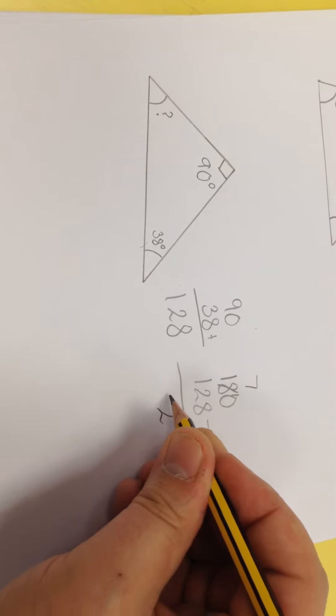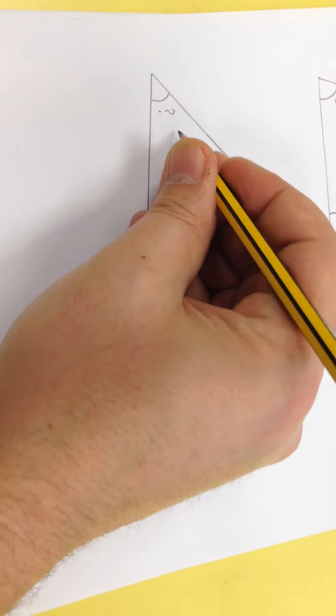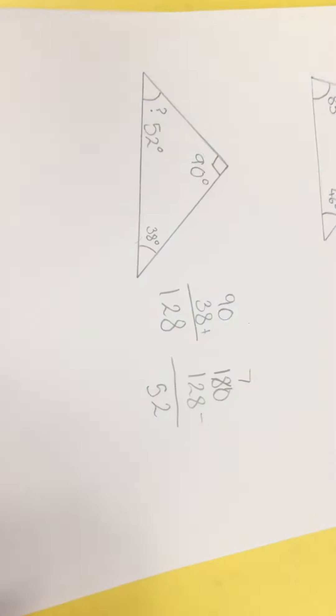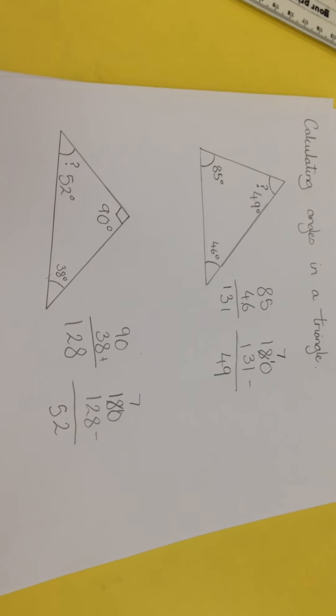10 take away 8 is 2. 7 take away 2 is 5. 1 take away 1 is 0. So the answer is 52 degrees. I'll put that in there. So we've found a missing angle in two different triangles.